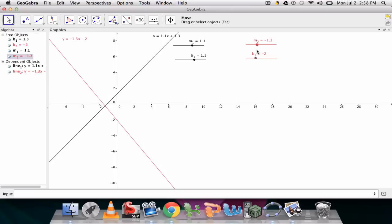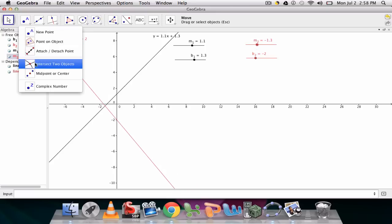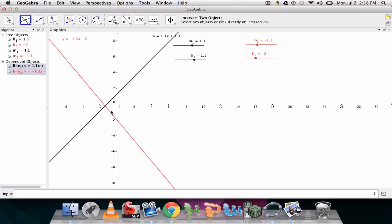So what do we do? Well, we want to examine the intersection point. So let's click that tool, the intersection of two objects. And click those two objects. And notice it creates point A over here, which is the intersection.